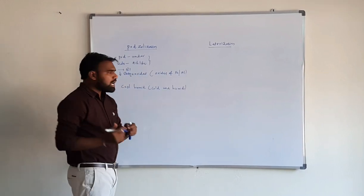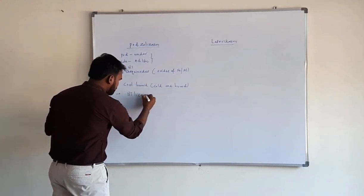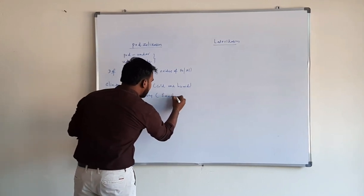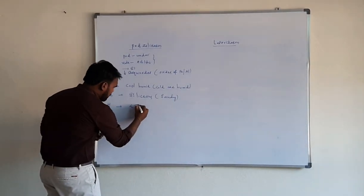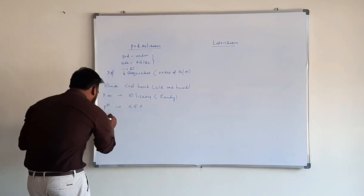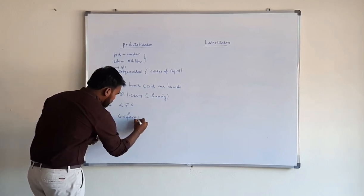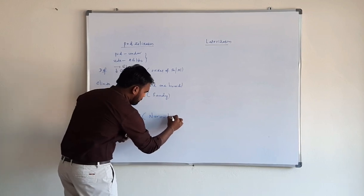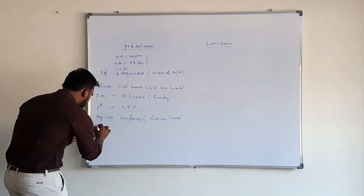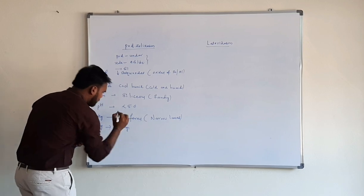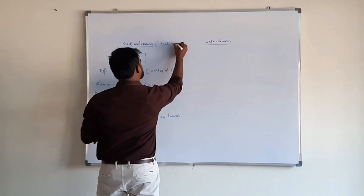The parent material for the podzolization process is siliceous or sandy parent material. The pH for podzolization is less than 5.0. Vegetation for podzolization is coniferous, and the dominant organism in podzolization is fungi. Remember, podzolization is also known as acid hydrolysis — this is very important.